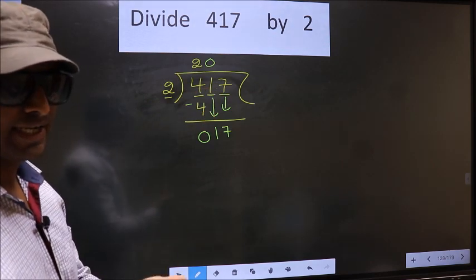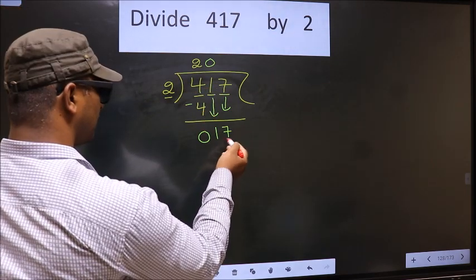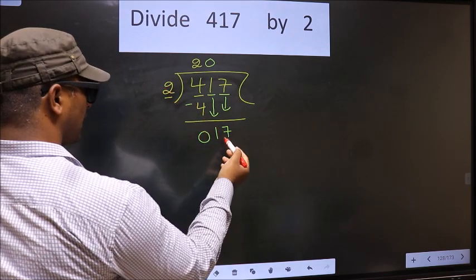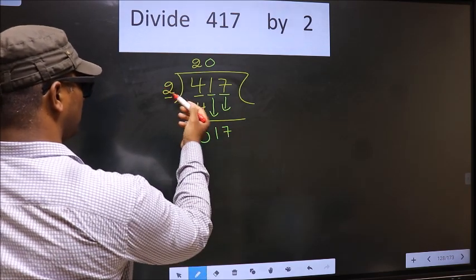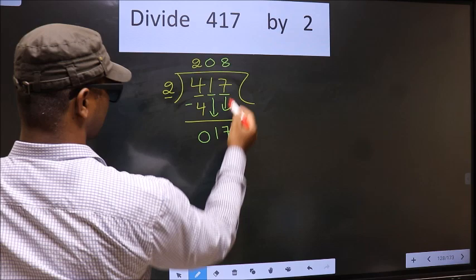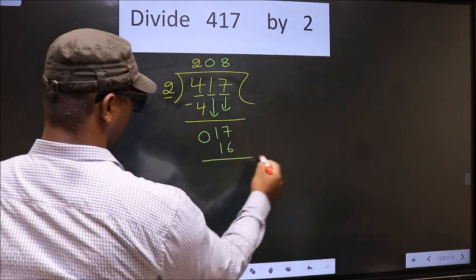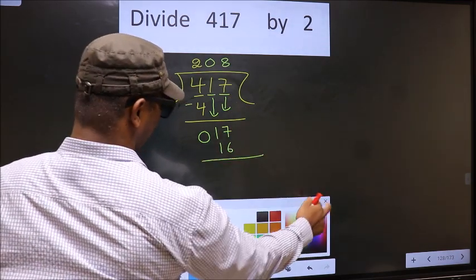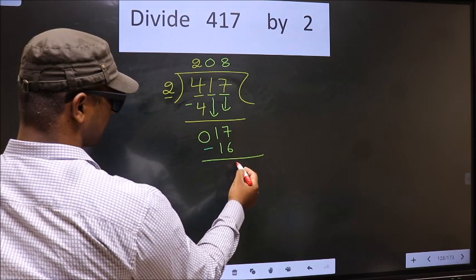Okay, next. Now here we have 17, here 2. A number close to 17 in 2 table is 2 times 8, 16. Now you subtract. 17 minus 16, 1.